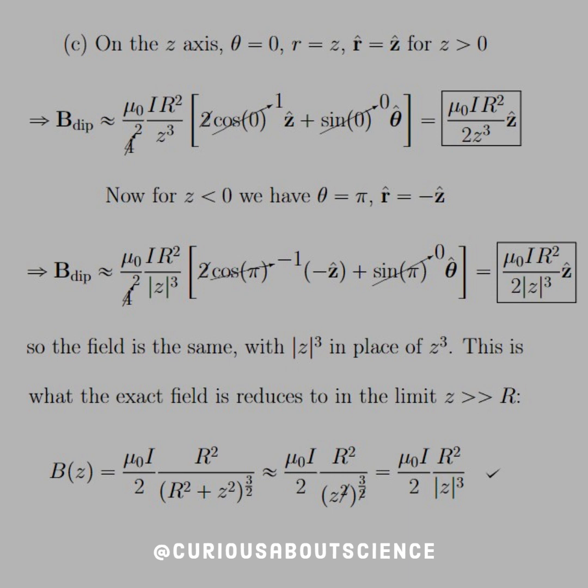On the z cubed and again we get similar cancellations. We note that it's the same thing given that we put the magnitude of z there because cosine of pi is negative 1 but also the unit vector is negative so they cancel so we get the same thing.